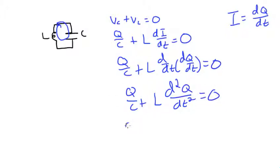So now we'll have Q over C plus L d²q dt² equal to zero, and then we'll rewrite this in terms of how you would see a simple harmonic oscillator equation. So the second derivative of one variable, which is a function of time, plus one over LC q equal to zero.